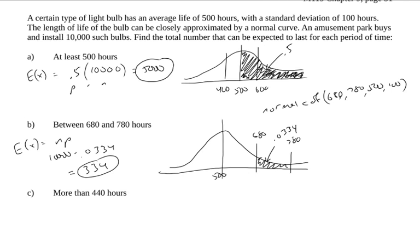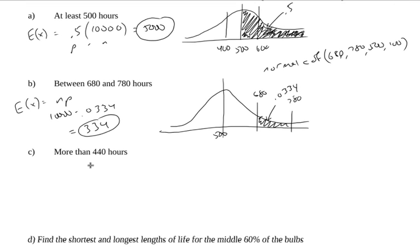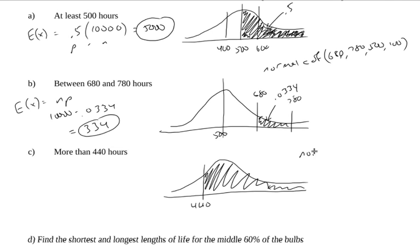The probability that the number of bulbs that we expect to last more than 440 hours is a very similar sort of problem. We're saying more than 440 hours, so we're going to do 440 is somewhere over here, a little bit to the left of the mean. And if we're saying we want the probability that each bulb lasts more than that, then we're shading to the right. So we're going to do normal CDF.